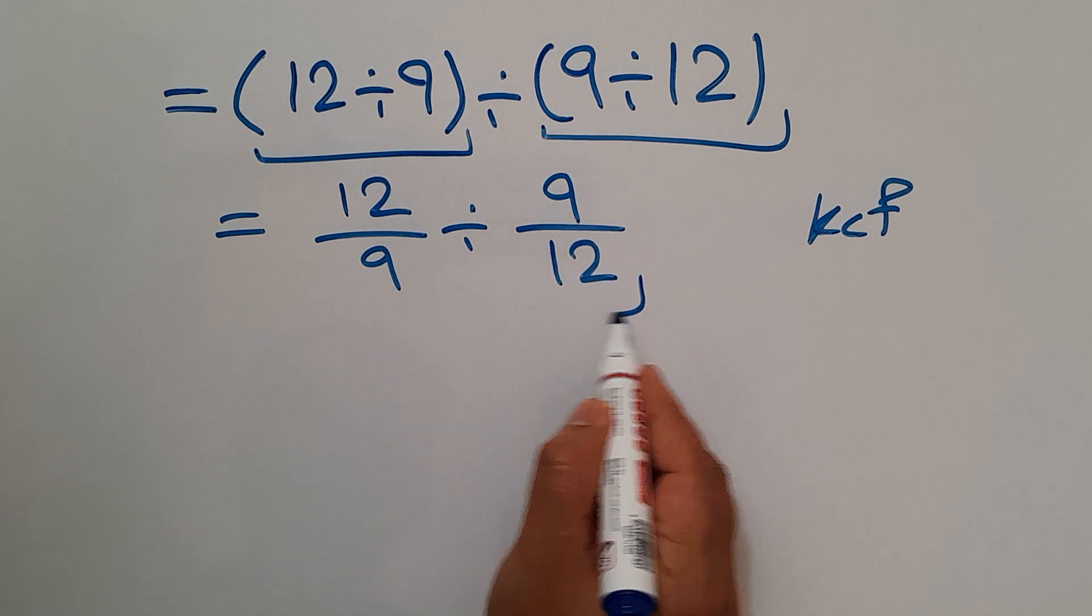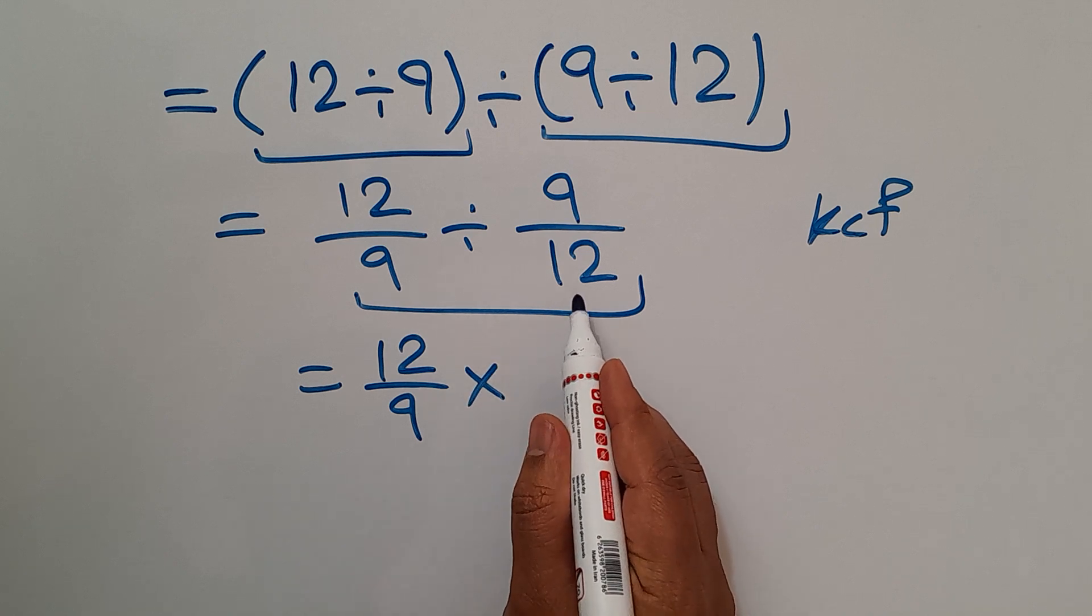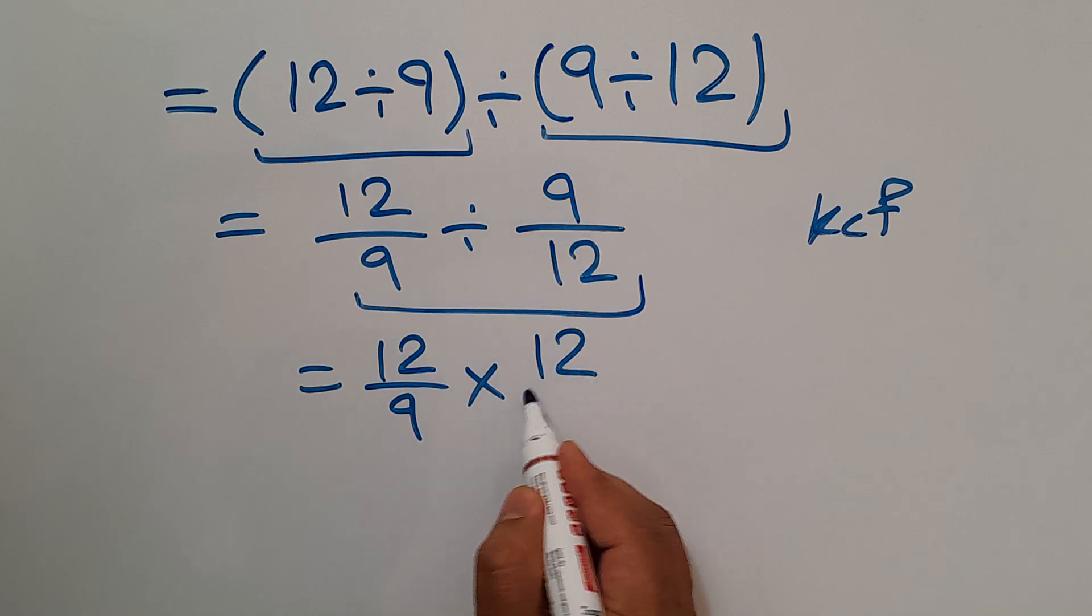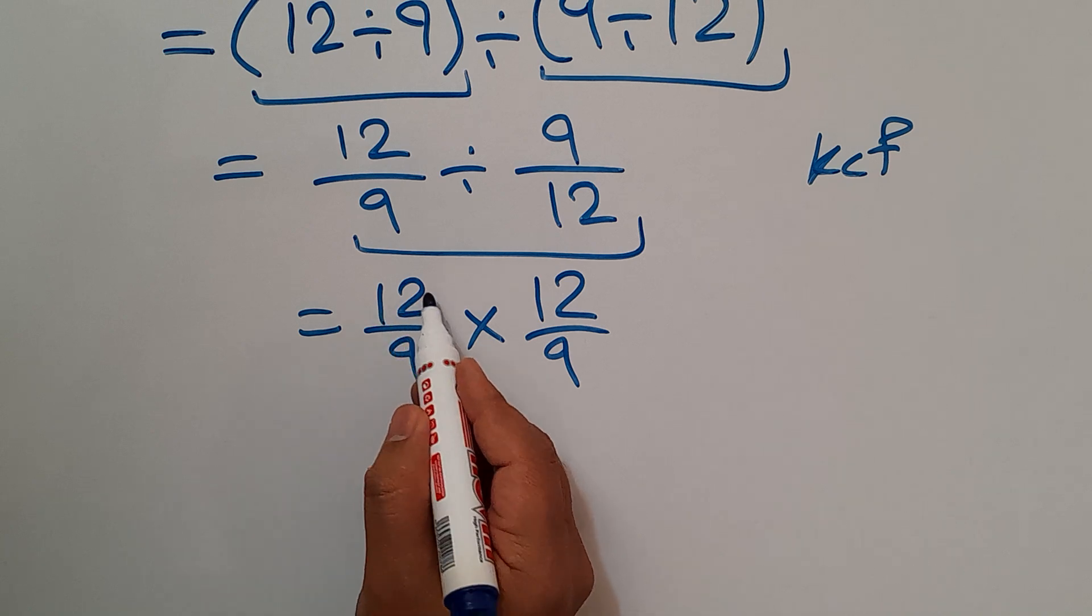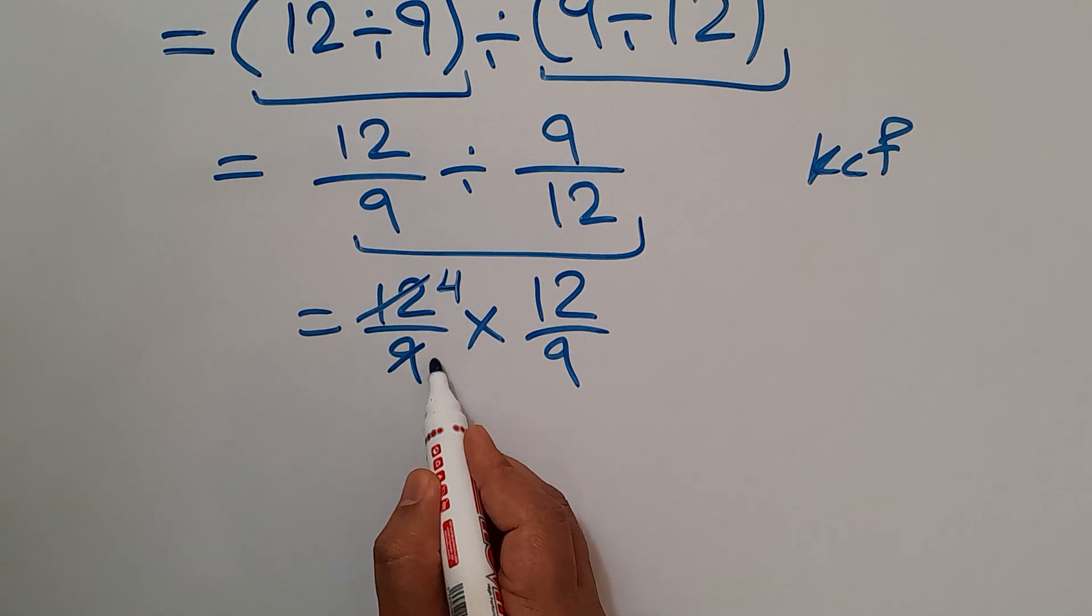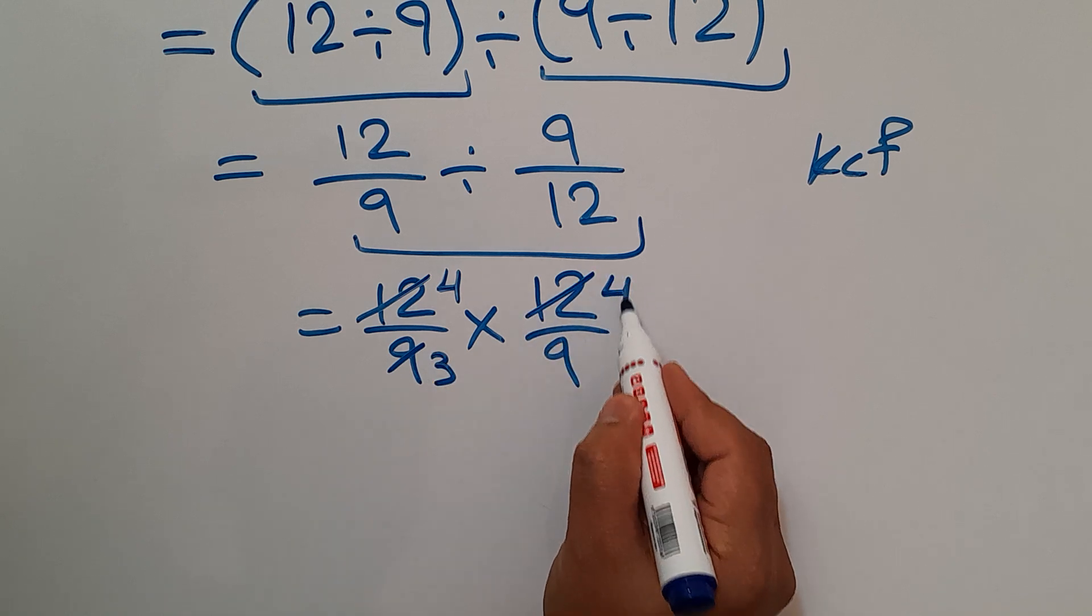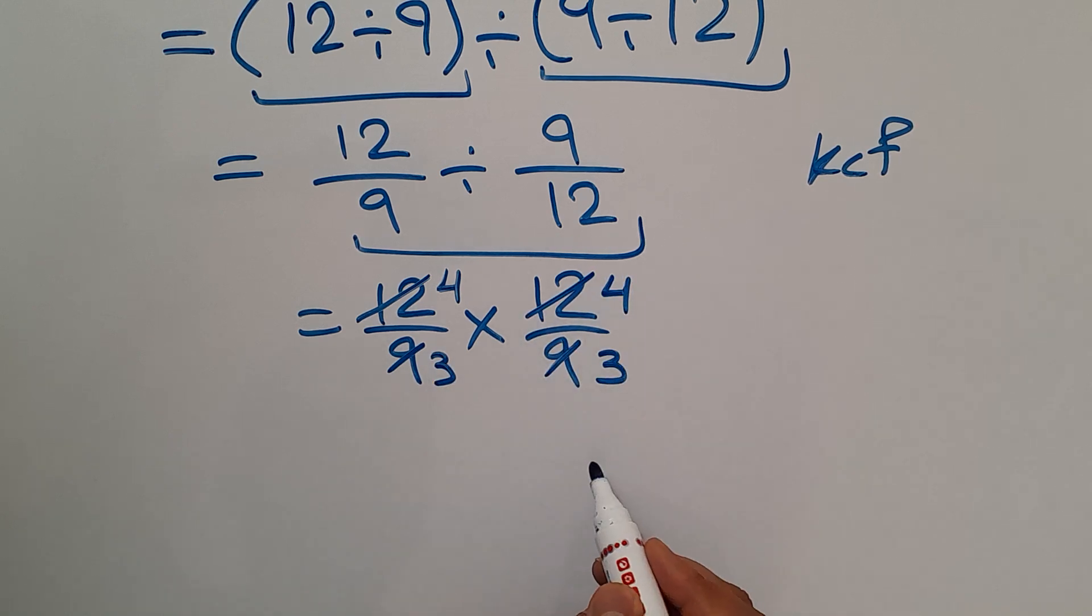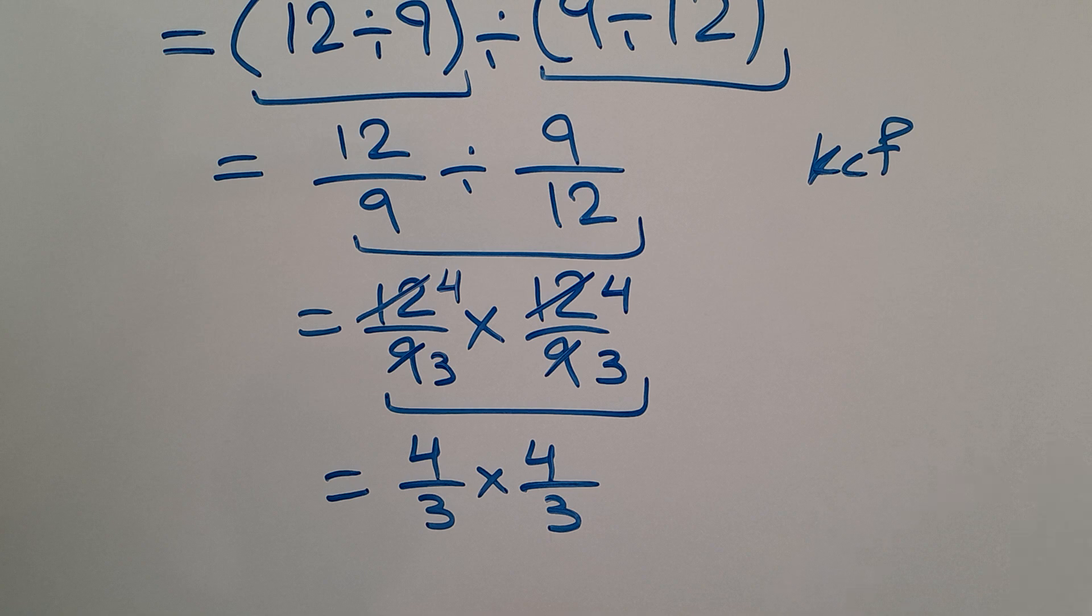We can write 12 over 9 times 12 over 9. Now 12 divided by 3 gives us 4, 9 divided by 3 gives us 3. Here we have 4 and 3, so 4 over 3 times 4 over 3.